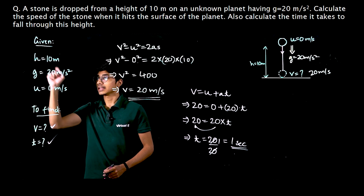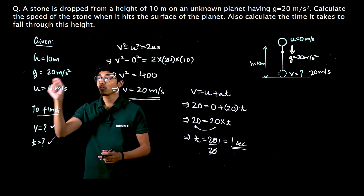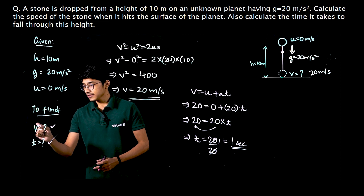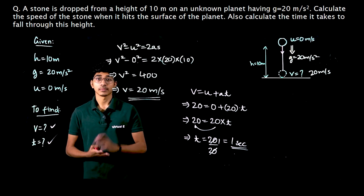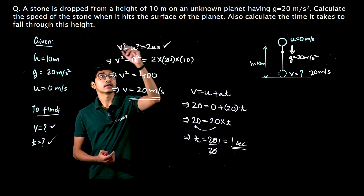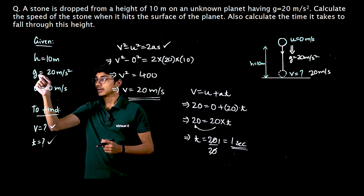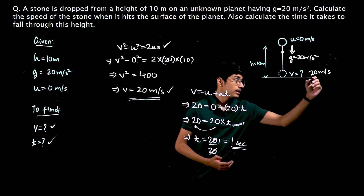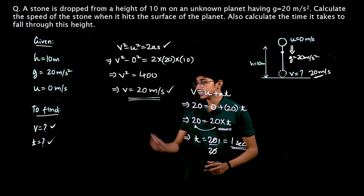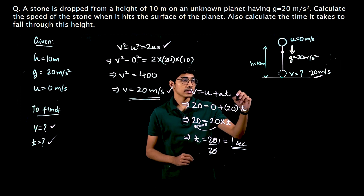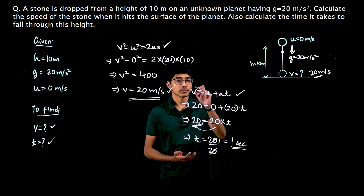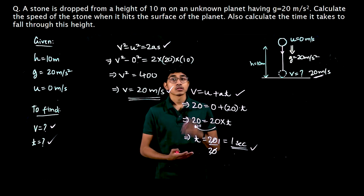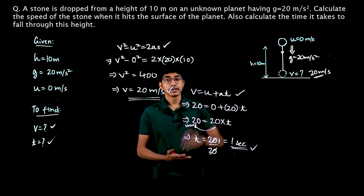So we have solved both parts of the question. First of all we noted that height and acceleration due to gravity are given, and since the stone is dropped, initial velocity is 0 meter per second. What was asked: the final velocity and the time it takes to fall. For the final velocity we used v square equals u square plus 2as and got 20 meter per second. For the time we used v equals u plus at and calculated t as 1 second. This is how you apply the formula where g is a different quantity.